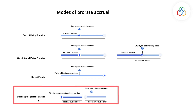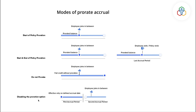Disable the Prorate Option: If the prorate accrual option is disabled, then the employee who joins after the set accrual date will not receive any of the entitled leave for that year and will only receive it on the next accrual date.